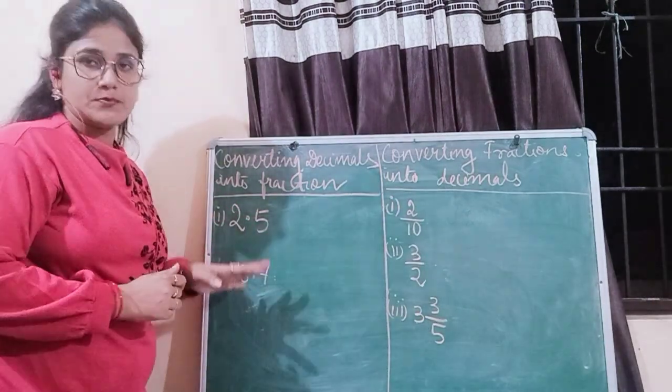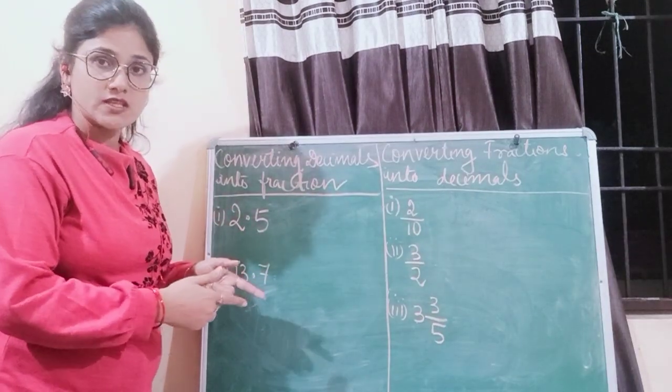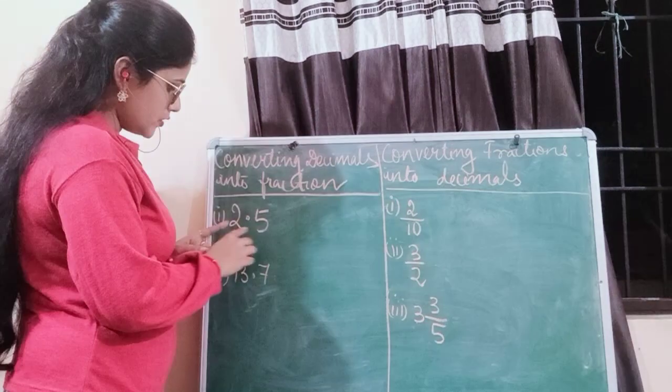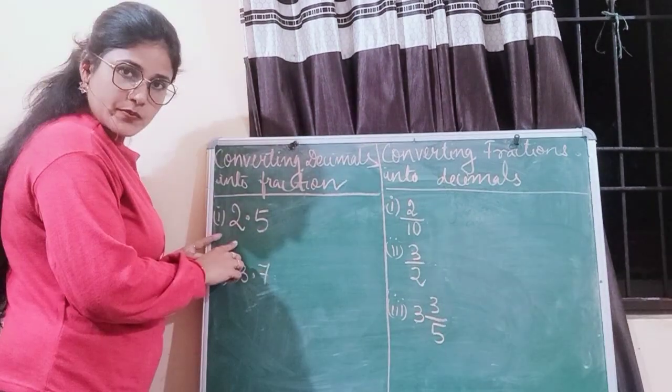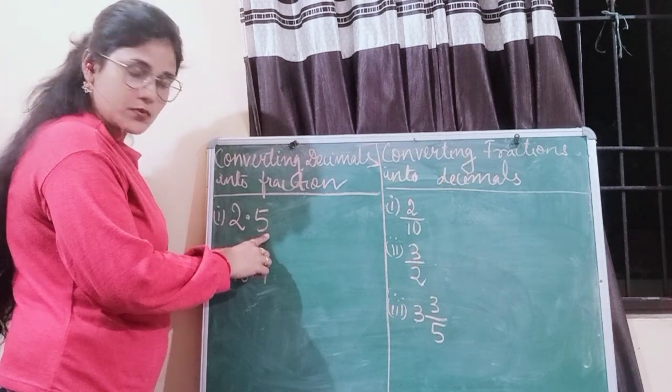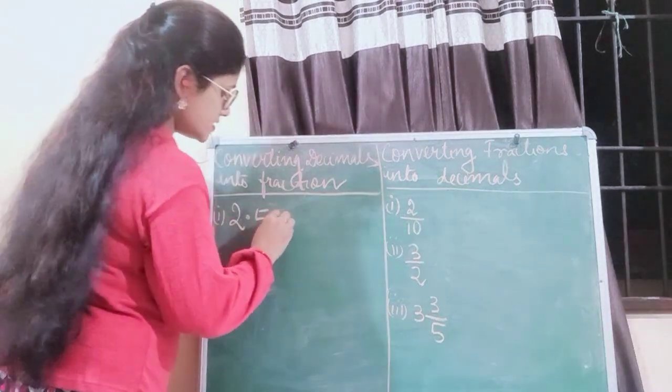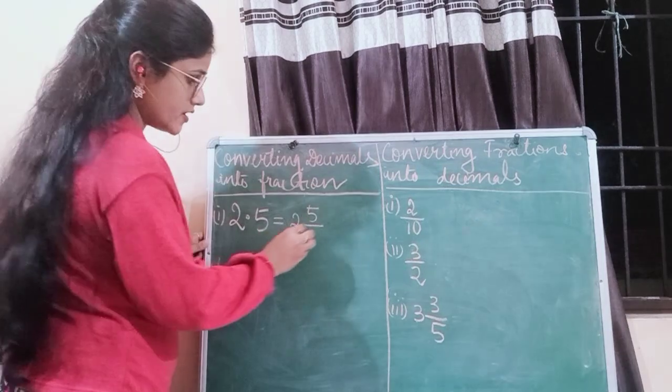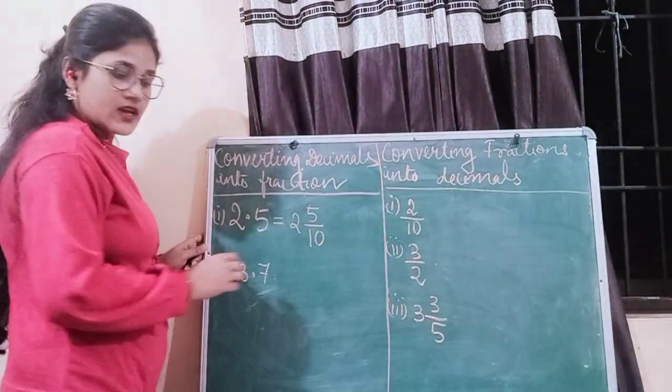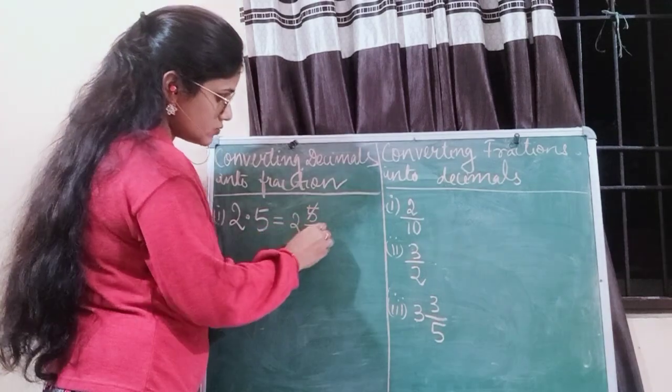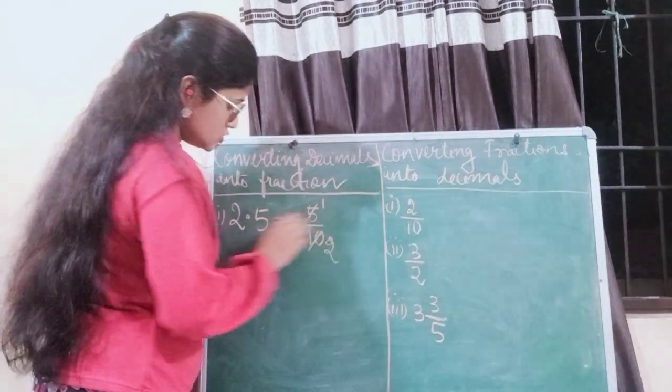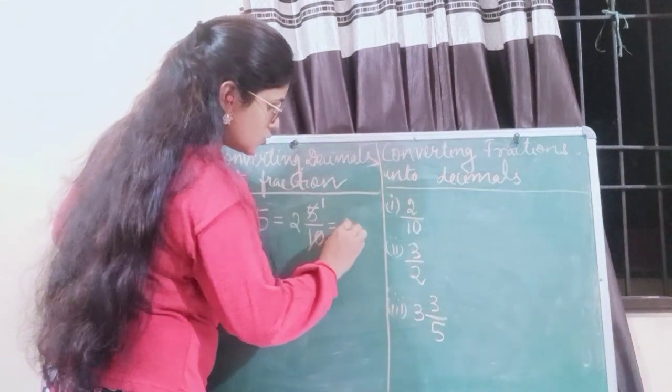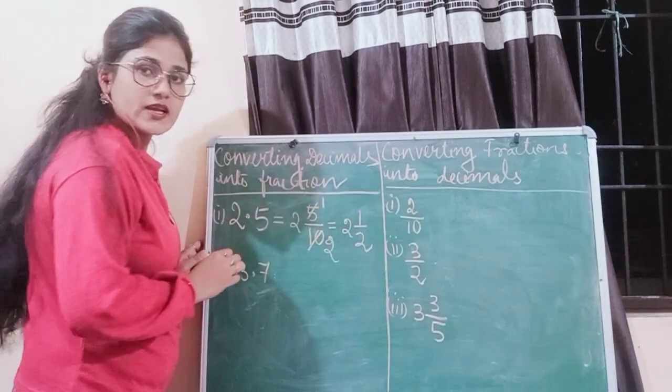I have already written some examples to save our time but I will be solving it in front of you, so please pay attention. So 2.5 - in this number, 2 is the whole number part and 0.5 is the decimals part. This can be represented as 2 whole 5. This is the 10th place so you will write this as 2 whole 5 by 10. Now this 5 by 10 can be reduced into 1 by 2. So 2.5 can be represented in fractional form as 2 whole 1 by 2.